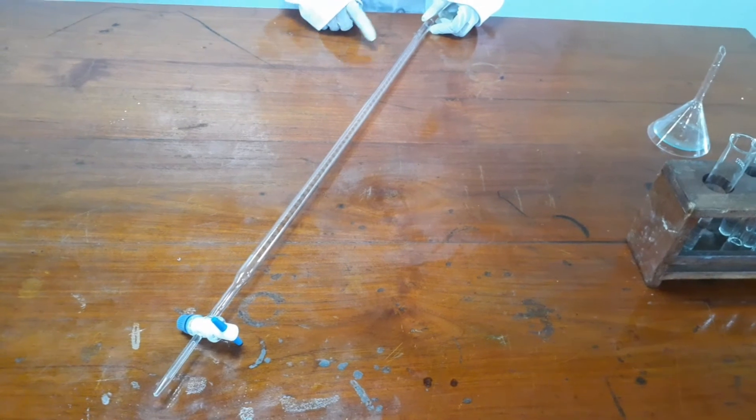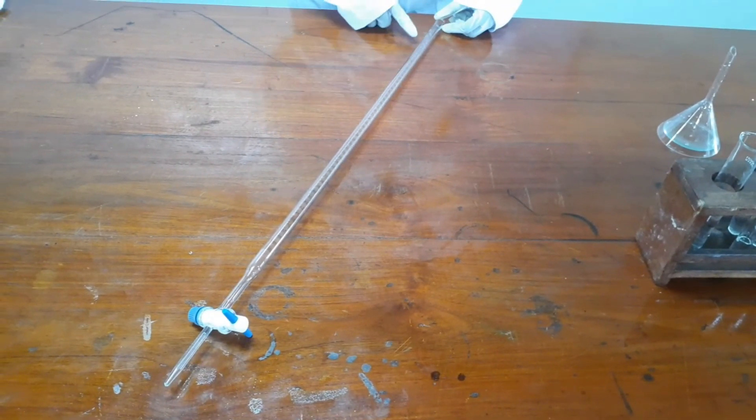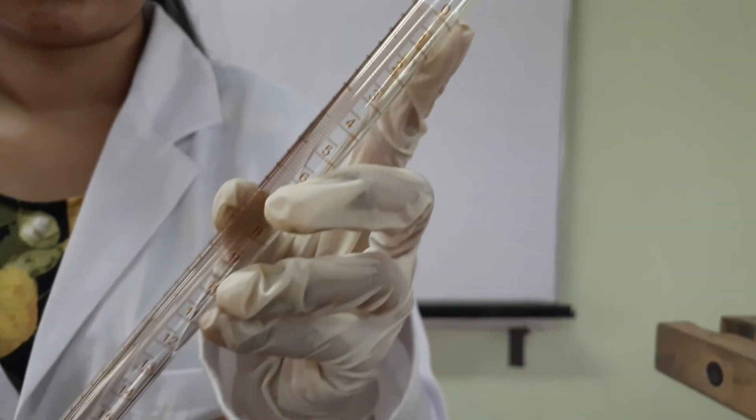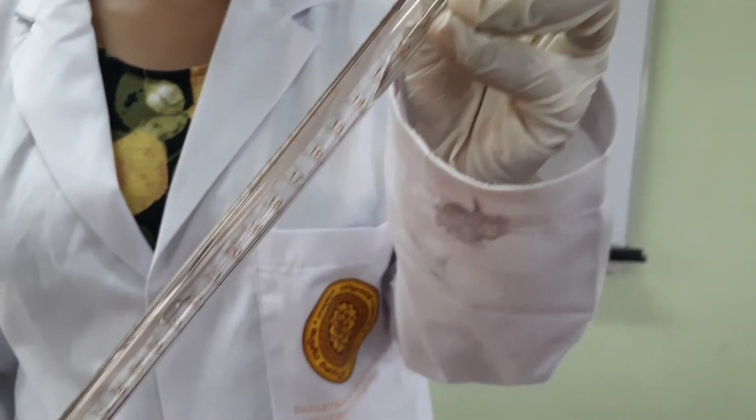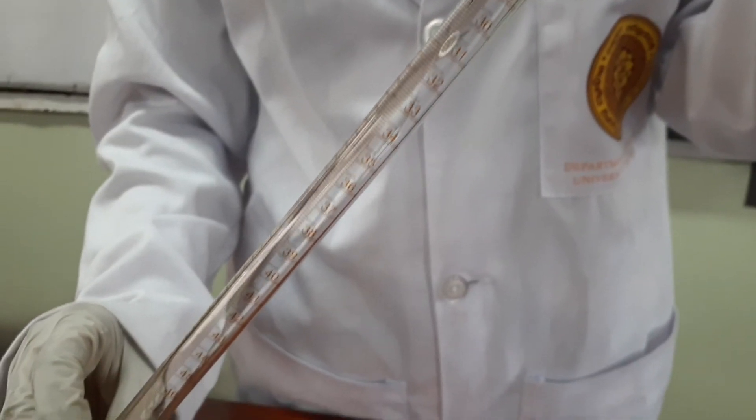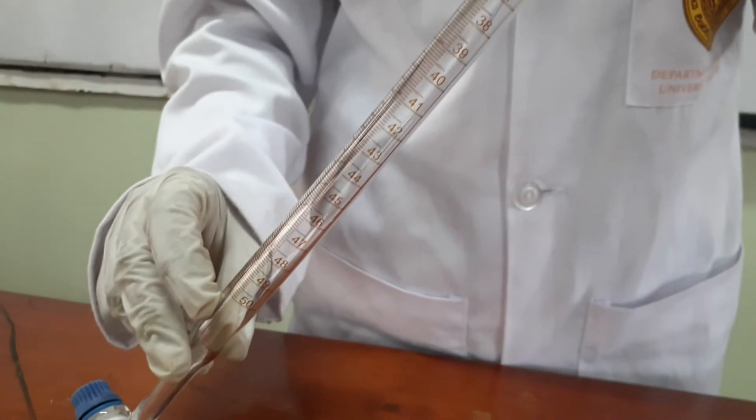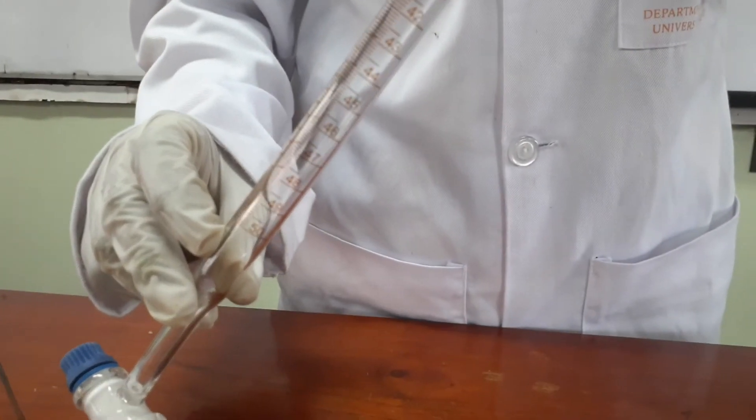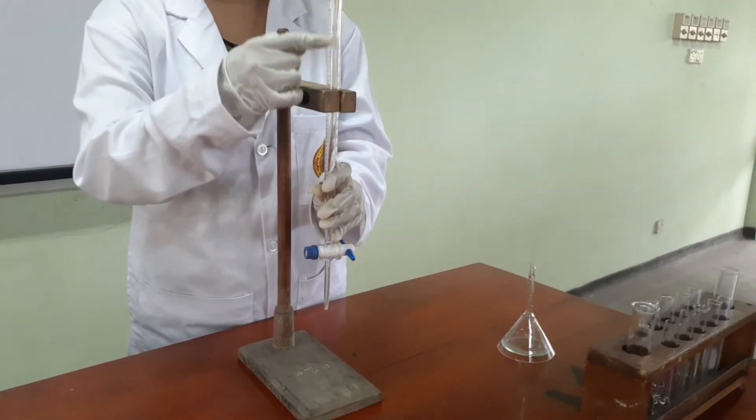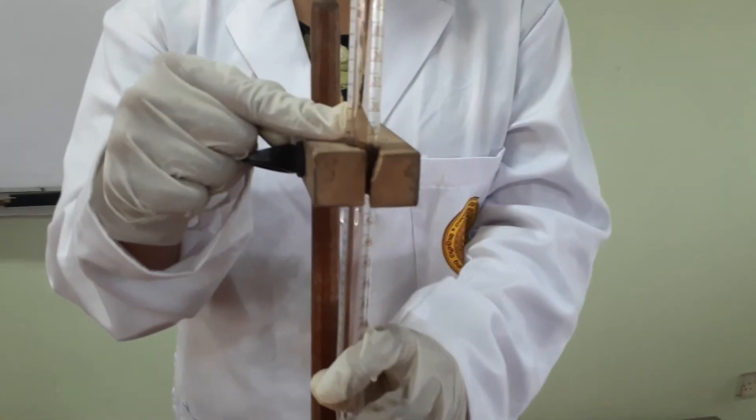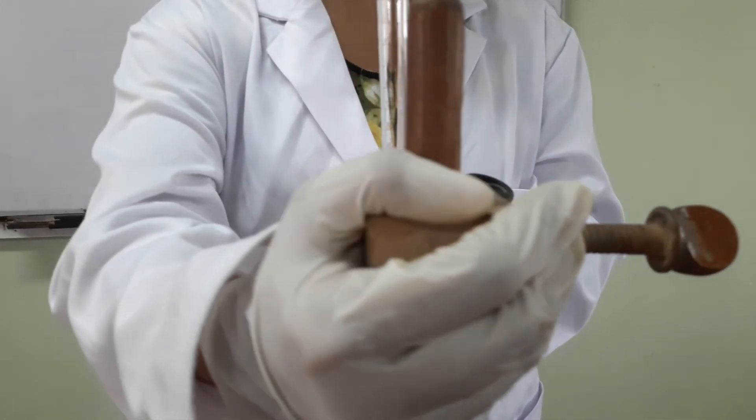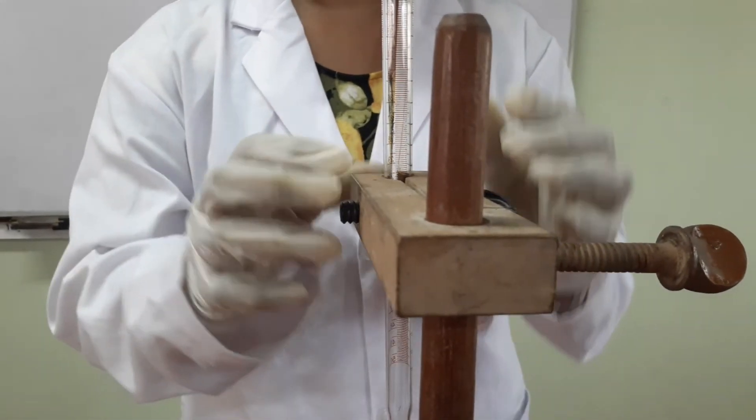Burettes. In laboratory, we use burettes to dispense and measure variable amounts of liquid in titrations. In burettes, the 0 mark is located at the top of the burette while the 50 ml mark is located near the stopcock. When filled to the 0 ml mark, the burette is saying 0 ml of the solution has been delivered. First, we must clamp the burette perpendicular to the lab bench. The burette calibration should be kept to our side. It will help us to see the amount of solution that has already been delivered.